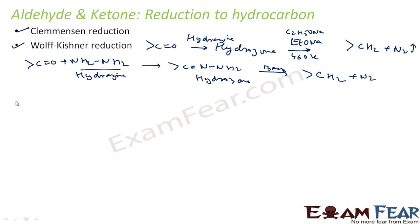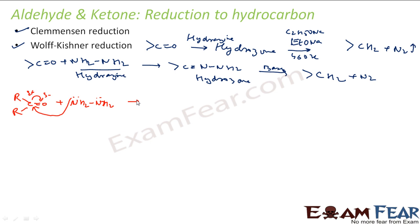Now the mechanism: I have R-CO-R (a ketone) and NH2-NH2 (hydrazine) with lone pairs. The carbonyl carbon is slightly positive; since hydrazine has lone pairs, the nitrogen attacks the carbon. The product formed is: carbon bonded to O⁻, NH2-NH2, and R groups. Nitrogen, having given electrons to carbon, gets a positive charge.